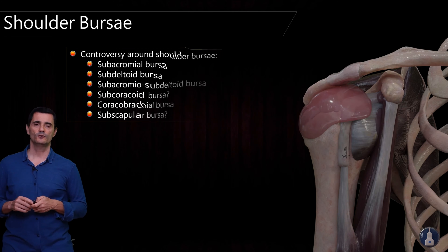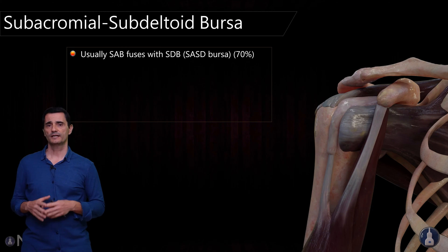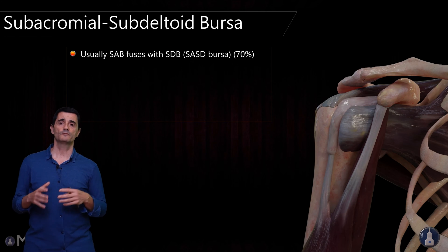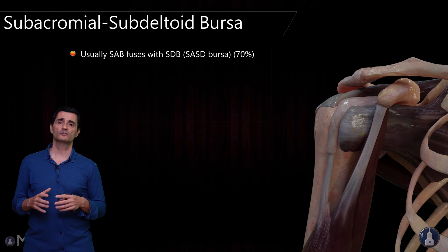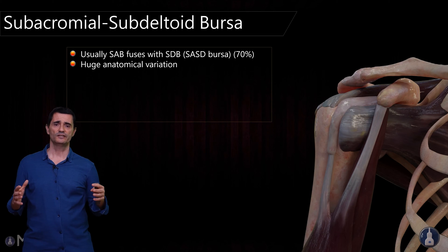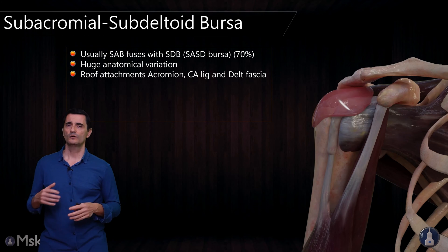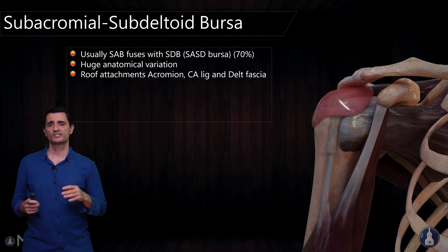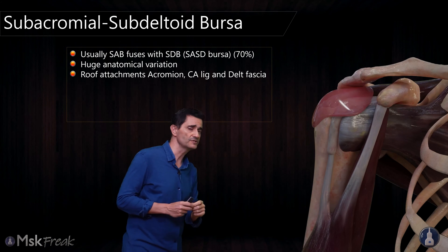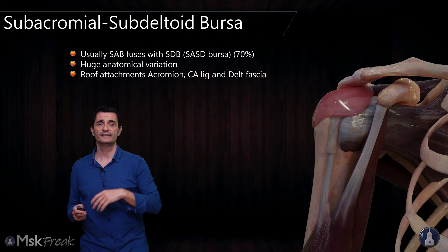So let's go into the subacromial-subdeltoid bursa. Usually the subacromial bursa fuses with the subdeltoid bursa in 70% of people, so it's more appropriate to talk about the subacromial-subdeltoid bursa. This bursa has a huge anatomical variation in terms of extent. We can say that it has a roof attachment to the acromion, coracoacromial ligament, and deep fascia of the deltoid muscle. This is very interesting because when we perform an injection in the bursa, we will take the reference of this deep fascia of the deltoid muscle and be sure we are inside the bursa.